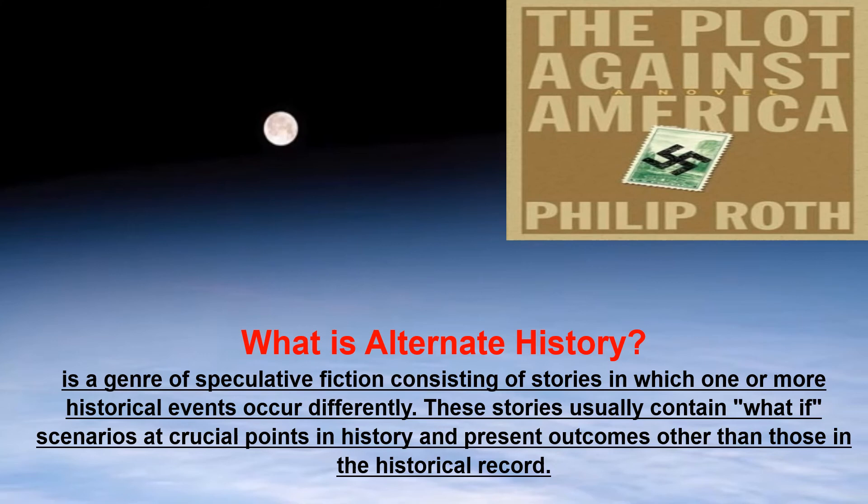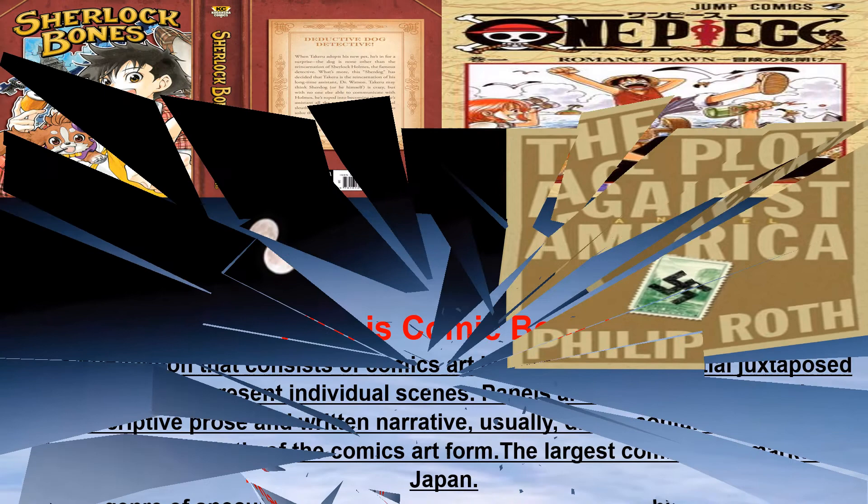Alternate history is a genre of speculative fiction consisting of stories in which one or more historical events occur differently. It usually contains the question 'what if?' — what if something happened differently in history? That is what we call alternate history.